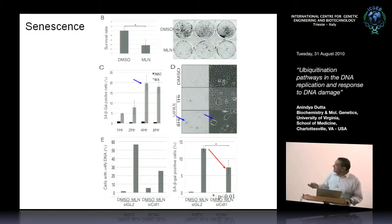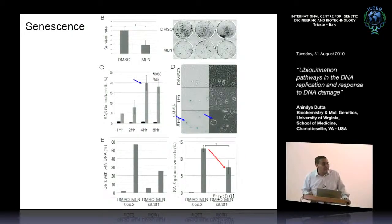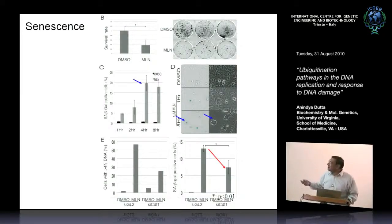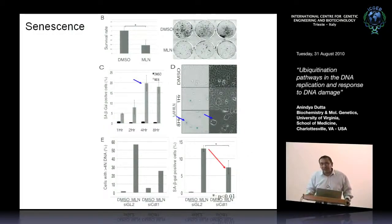Interestingly, the senescence induced by MLN4924 is also decreased by CDT1 knockdown. That was reassuring because MLN will inhibit tons of Cullins — CUL1, 2, 3, 4, 5 — each with potentially 50 to 100 substrates. Yet by just selectively preventing the stabilization of CDT1, we recover the cells significantly and decrease senescence. So their original premise was correct: it's the CDT1 stabilization that seems to be so toxic for these cells.